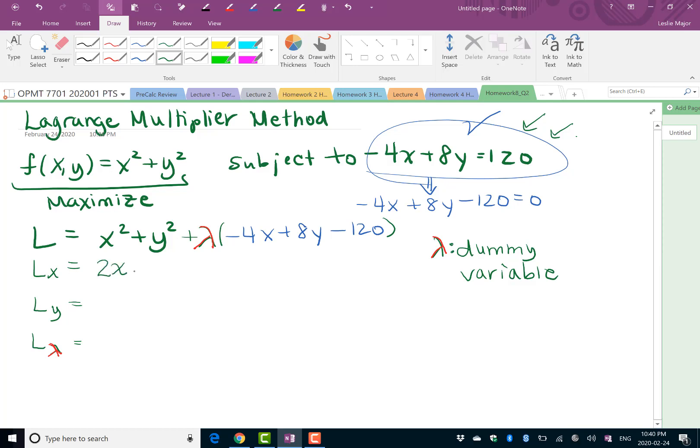Lx, partial derivative with respect to x, is going to be 2x. The y squared term has no x's in it, so derivative with respect to x is 0. Plus lambda times by derivative of negative 4x, which is just negative 4. So we end up with 2x plus lambda times negative 4. Ly, same idea: 0 plus 2y plus lambda times 8.